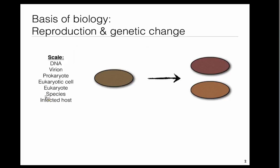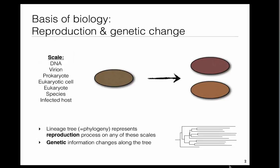One can illustrate this with bubbles — one bubble is one unit at any of those scales, say a eukaryote. This eukaryote reproduces, and during reproduction there may be slight changes in the genome, some mutations, so we may get slightly different offspring. When we follow this reproduction process through time, we obtain a lineage tree, displaying this reproduction process by bifurcation, where every bifurcation is a reproduction event, say a speciation event.